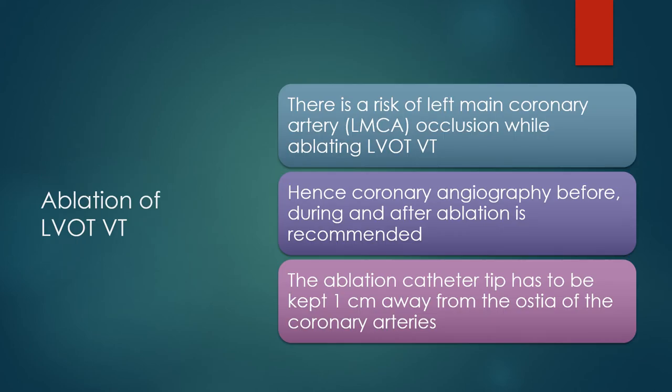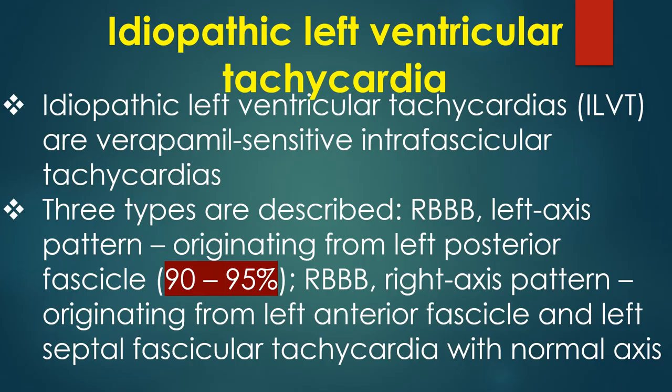There is a risk of left main coronary artery occlusion while ablating LVOT VT; hence coronary angiography before, during, and after ablation is recommended, and the ablation catheter tip must be kept 1 cm away from the ostia of the coronary arteries. Idiopathic left ventricular tachycardias are verapamil-sensitive fascicular tachycardias. Three types are described: RBBB left axis pattern originating from left posterior fascicle, RBBB right axis pattern originating from left anterior fascicle, and left fascicular tachycardia with normal axis.